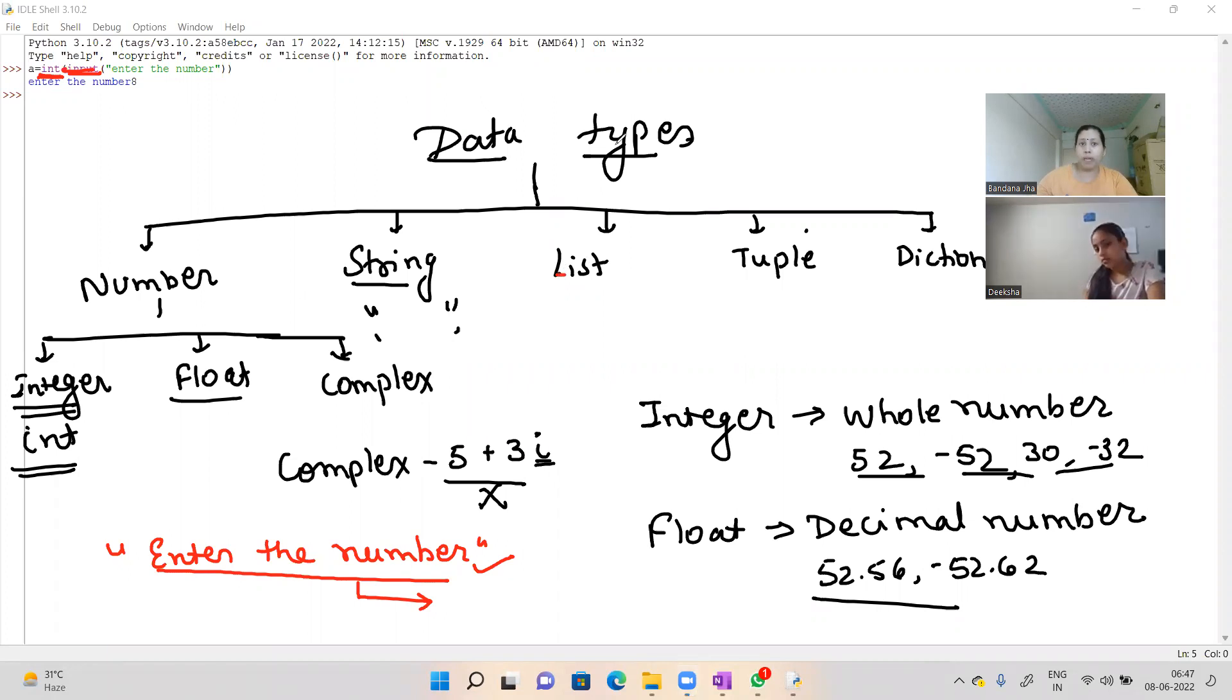Okay. The next topic comes here about your list. List is written in your square bracket. Suppose if I have written here, B is equals to in a square bracket, I will write two comma three comma diction, and then close it.